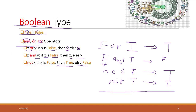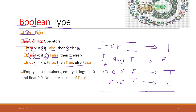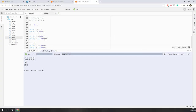For the 'or' and 'and' operators, they check x first and depending on the value of x, return either x or y. To make things more complicated in Python, empty data containers — like empty lists, empty tuples, empty strings — as well as integer zero, float zero, and None are all considered False.